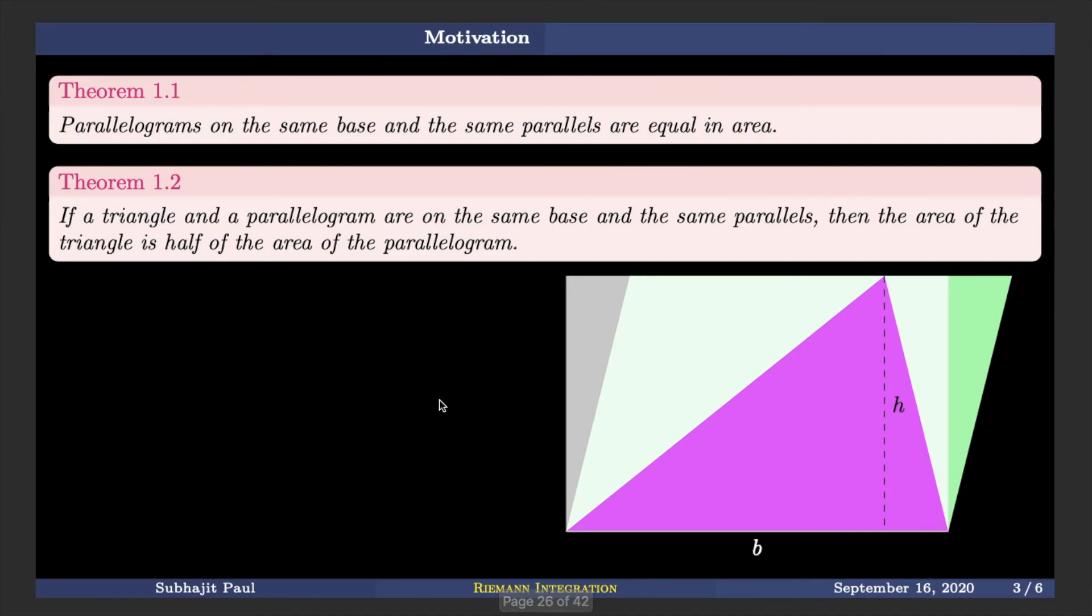Now, if we have h as the height of the triangle and b as the base of the triangle, then by our axiom that the area of the rectangle is the length times its breadth, b is the breadth of the rectangle and h may be the height. So b times h will be the area of the rectangle and therefore by this theorem, the area of the triangle will be half base times height. So here area of the triangle is half times area of the rectangle, that is half times base times height.